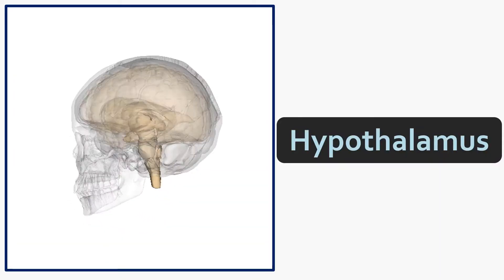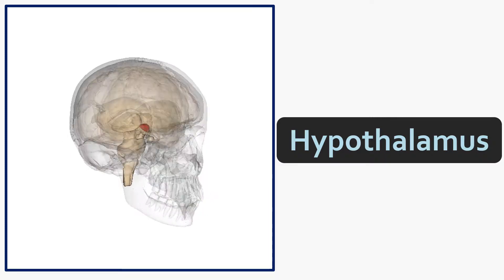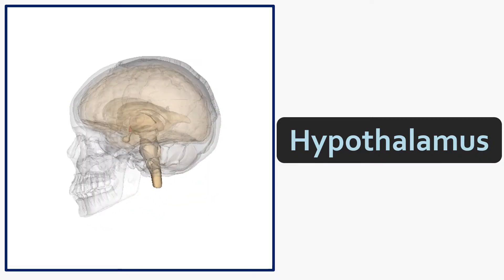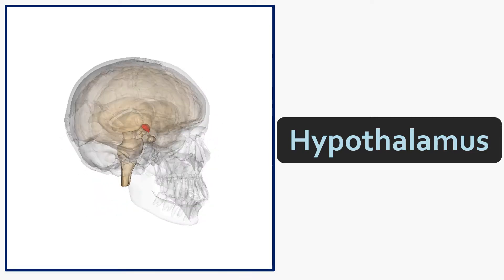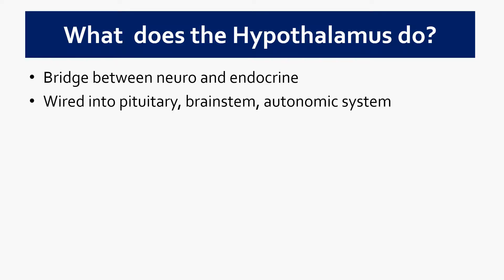Here then is the hypothalamus — the fornix and other regions connect into this small region at the front of the brain. The hypothalamus is the bridge between the nervous system — in particular the brain — and the endocrine system. It's wired into the pituitary, the brain stem, and the autonomic system, all of which are responsible for generating feelings at a basic physiological level, such as speeding up or slowing down the heart.